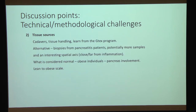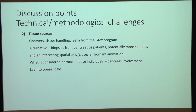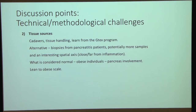On tissue sources: cadavers, the GTEx program (which has extensive experience with problematic tissues), and biopsies from pancreatitis patients offering interesting spatial sampling near or far from inflammation were all discussed. For individual selection, the age axis is interesting, but particularly for the pancreas, the lean-to-obese axis is compelling — obese individuals are often insulin-resistant, causing the endocrine pancreas to compensate, with potentially significant transcriptomic and proteomic changes.